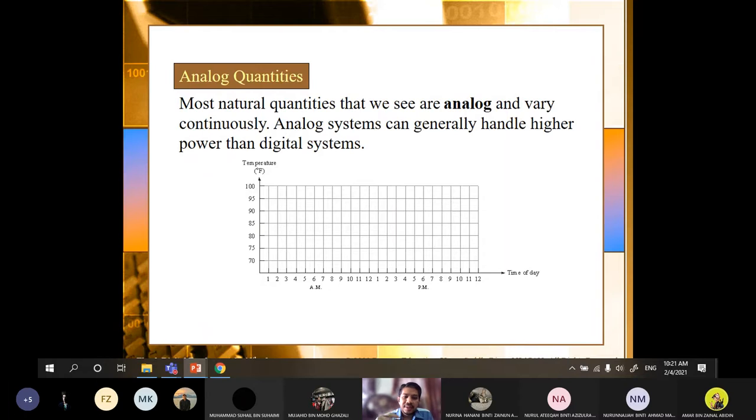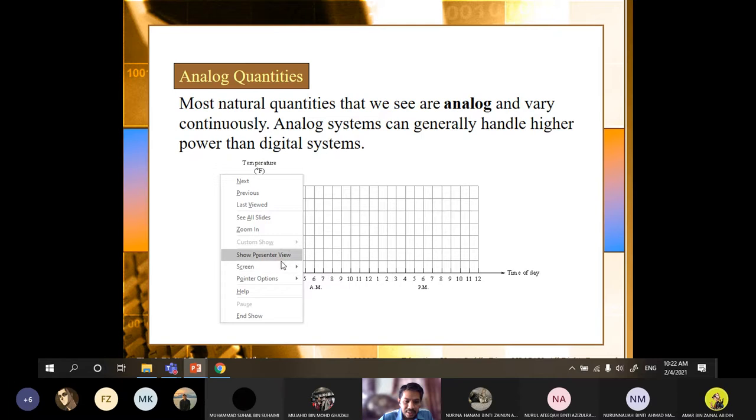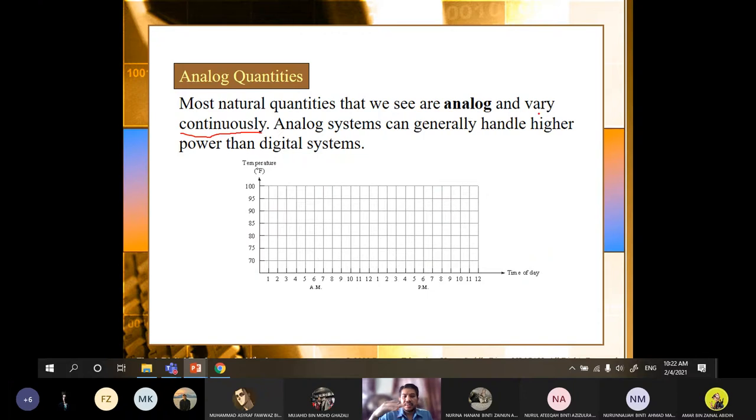I mentioned a bit earlier in the first part of the lecture that we have analog data or analog signal, we have digital data, we have digital signal. So natural things in a natural form, for example, human voice are analog in nature. Analog means the main characteristic of analog signal is it's continuous. So it can handle higher power than digital system. So you need to be able to differentiate between what is analog signal and what is analog system.